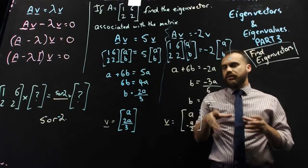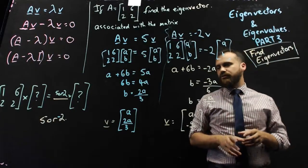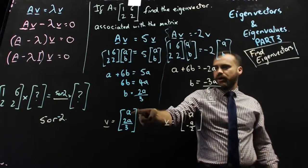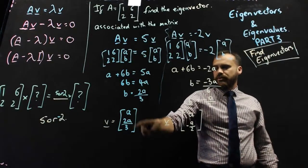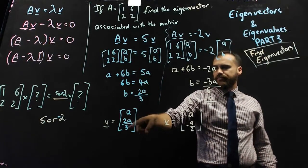But there are an infinite number of eigenvectors that we can have as long as they take the form of a, 2a over 3. So that could be 1 and 2 over 3, or that could be 2 and 4 over 3, or that could be 3 and 2.